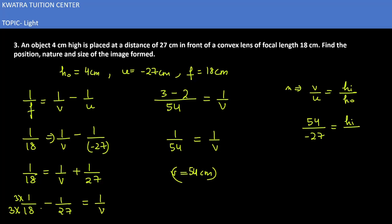How much is the value? Hᵢ has not been given here, h₀ has been given which is 4. Now you can take 4 to the other side. Minus 27, 27 and 54 will cancel. How much is the value in this case? Minus 8cm.